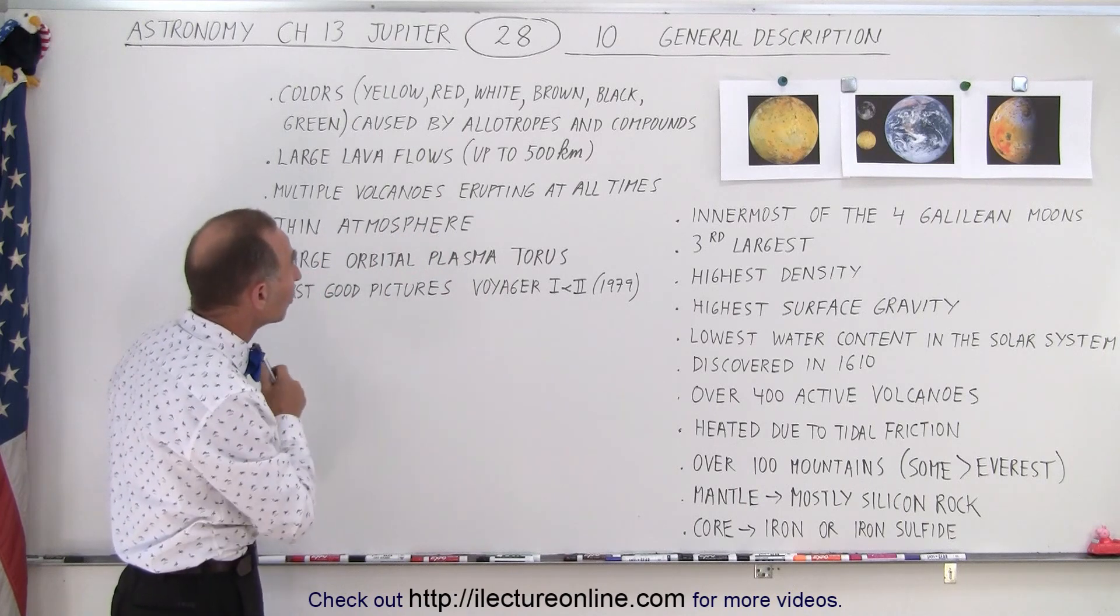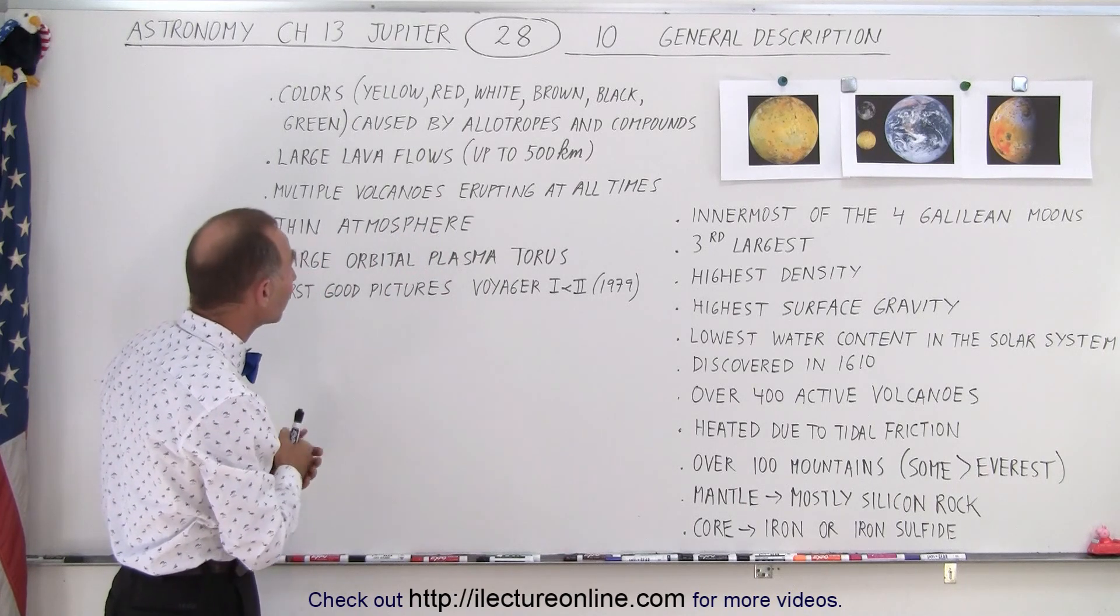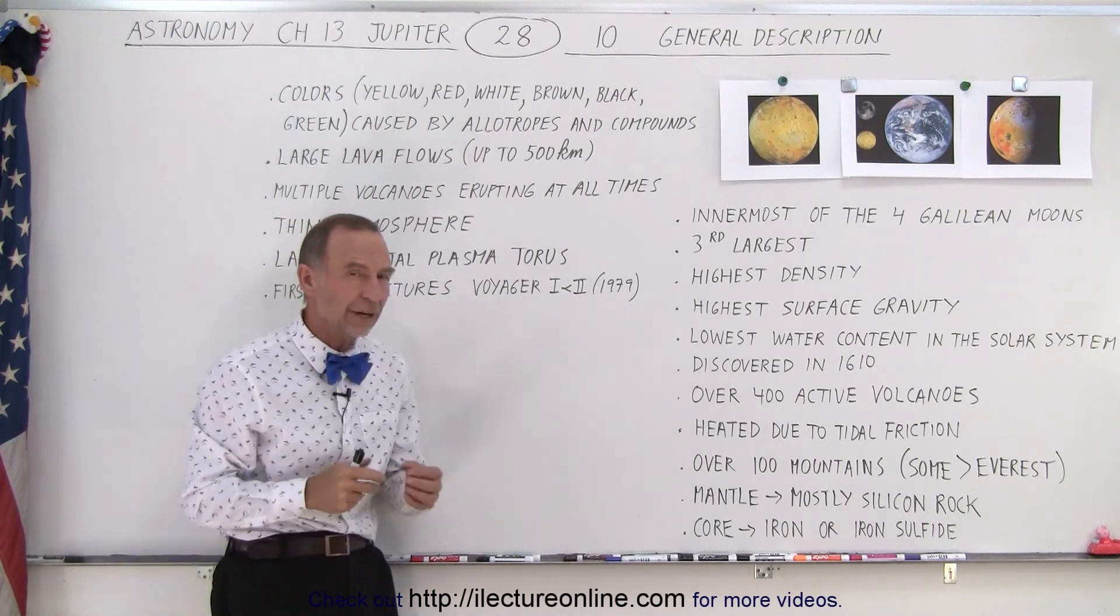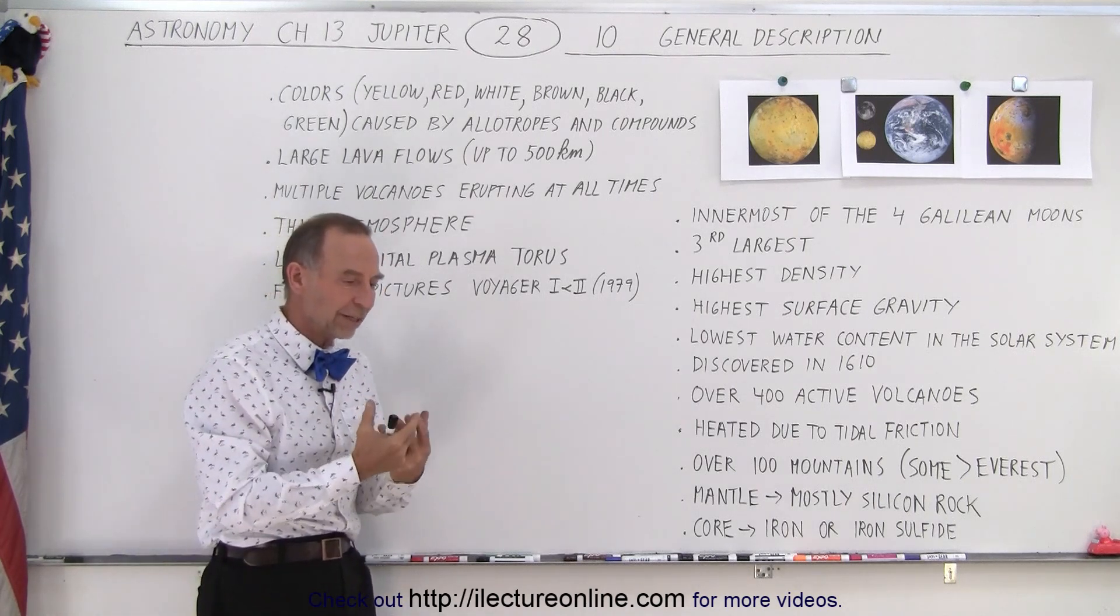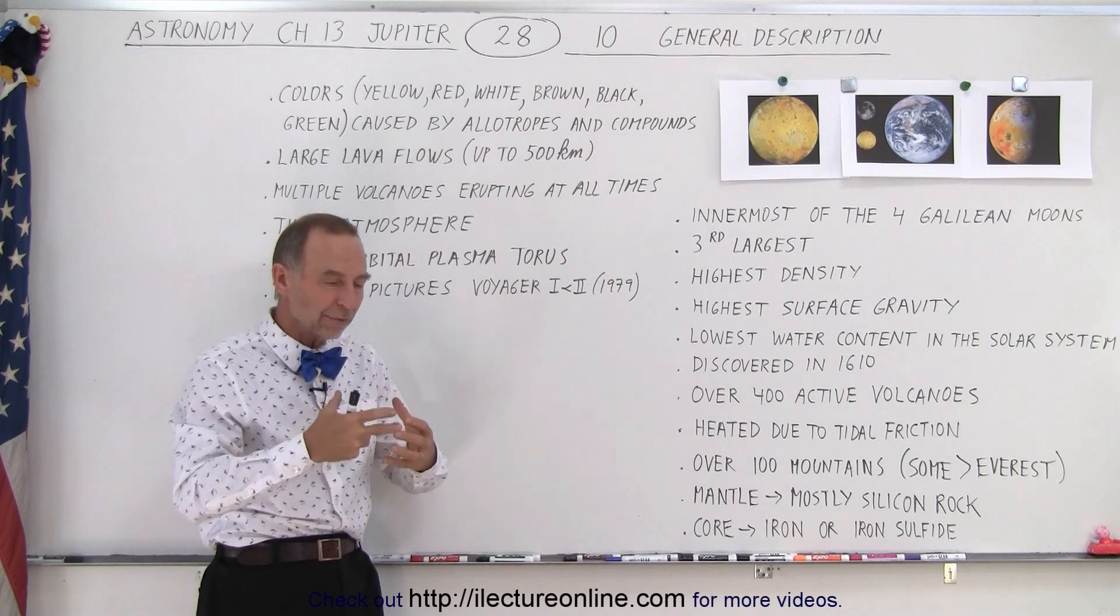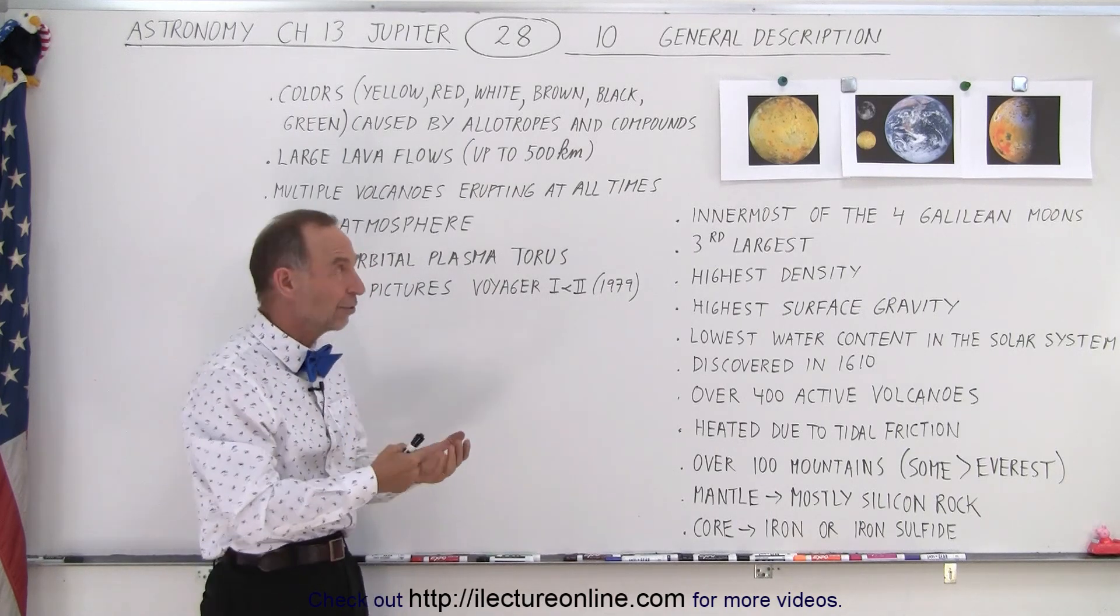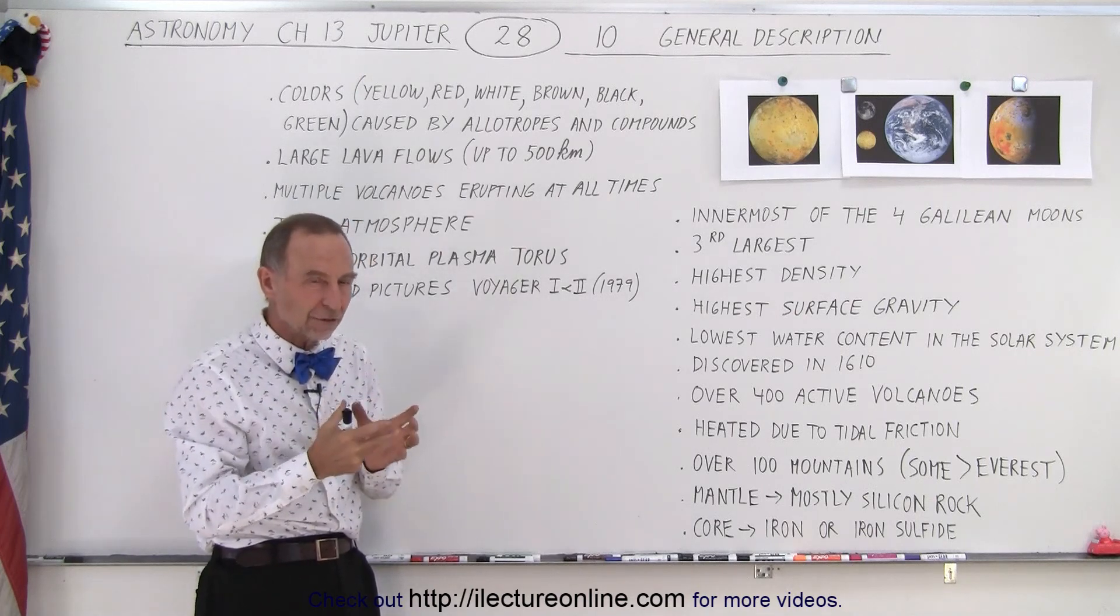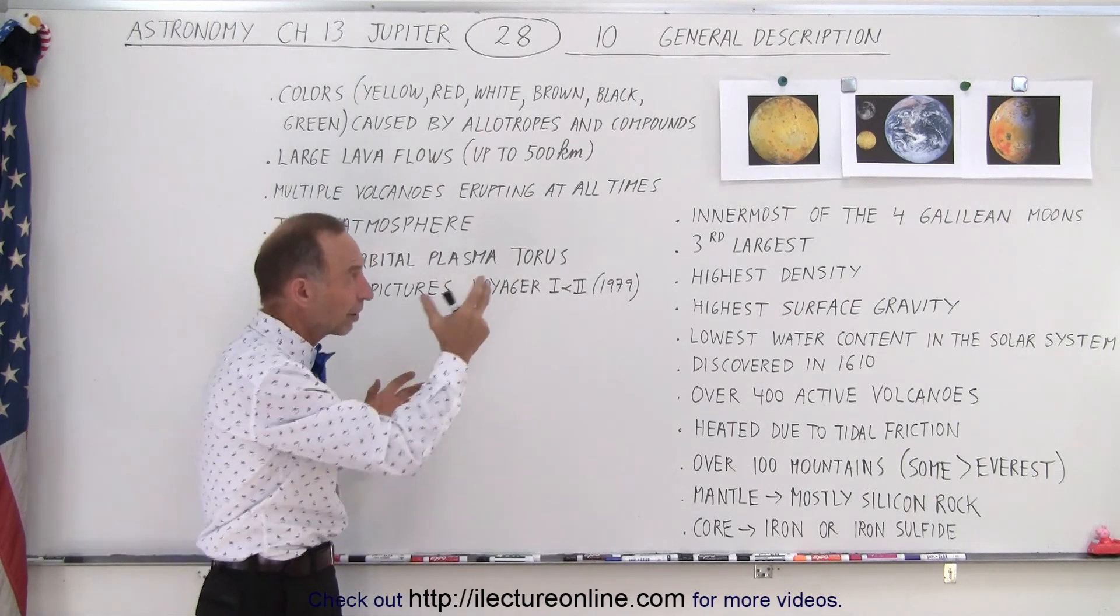The colors that we see is yellow, red, white, brown, black, and green. They're all caused by the allotropes and compounds made of sulfur. Allotropes means that sulfur can exist in different types of structures. Each one of them causes different colors. And so having compounds and the allotropes, all the various combinations of them, causes all those various colors to exist. That's why we have those beautiful colors in Io.